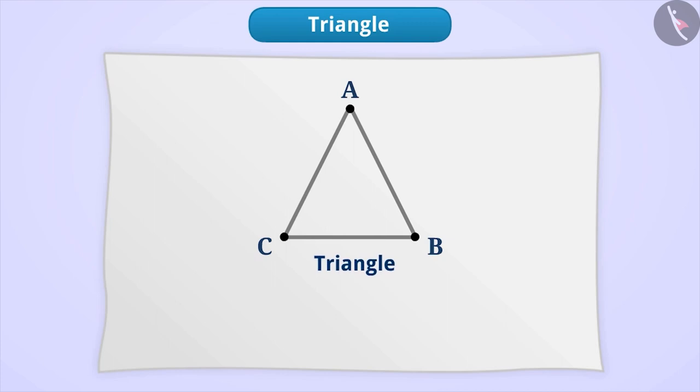We know how to name a polygon. So will you be able to name this triangle? Give it a try. Come, let me tell you. To name it, we start from one point and move in one direction at the boundary and write the subsequent points one after the other until we reach the starting point.